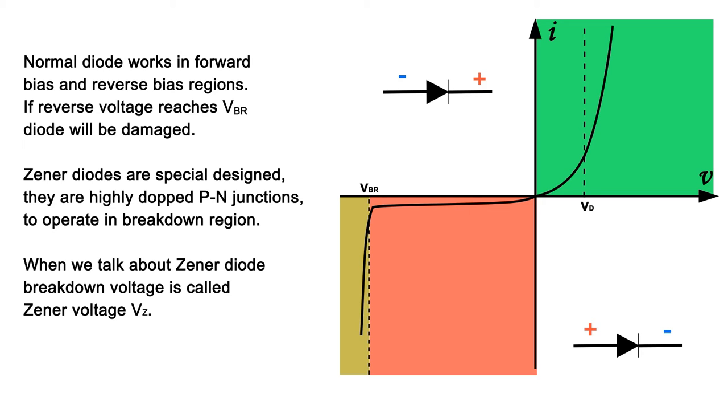Zener diodes are specially designed. They are highly doped PN junctions to operate in breakdown region. When we talk about zener diode, breakdown voltage is called zener voltage VZ.